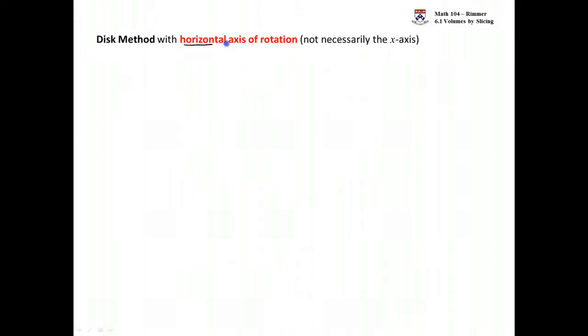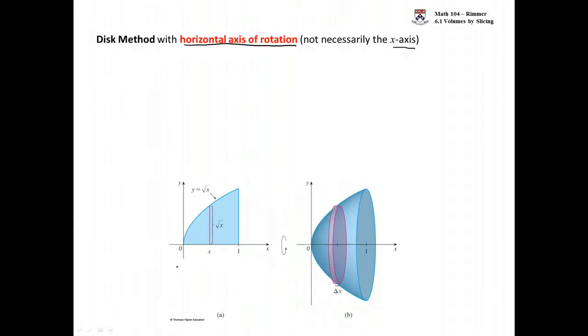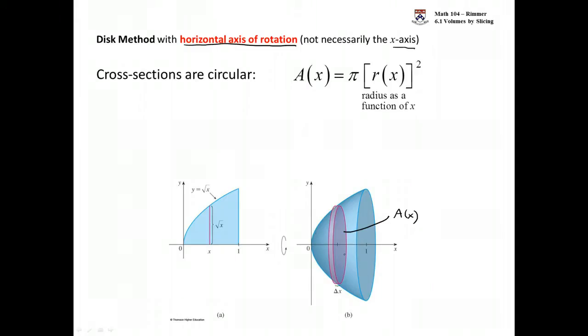So let's say we have a horizontal axis of rotation, maybe not the x-axis. In this picture it'll be the x-axis. I blew up the picture that we had on the other slide here. So as we were saying, I have an area here that I have to find. It's a circle. These cross sections are circular. The area of this cross section will be pi r squared.